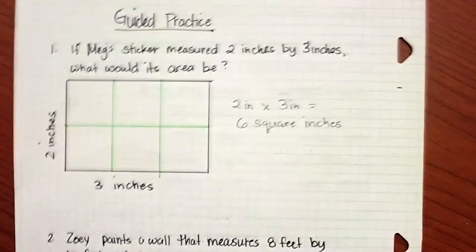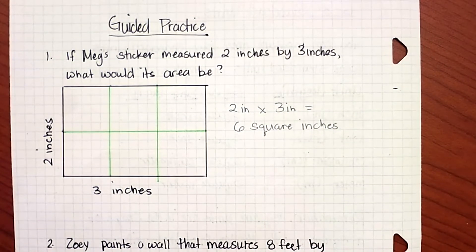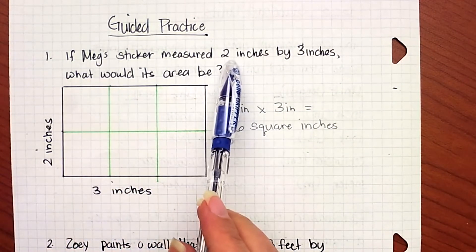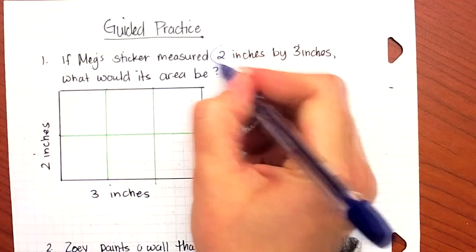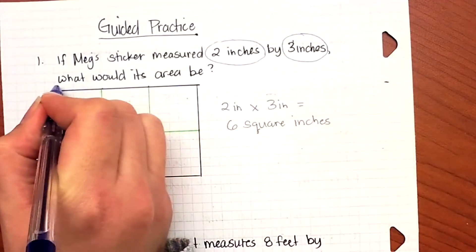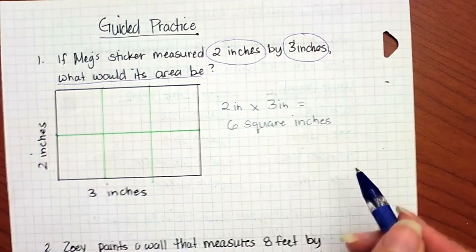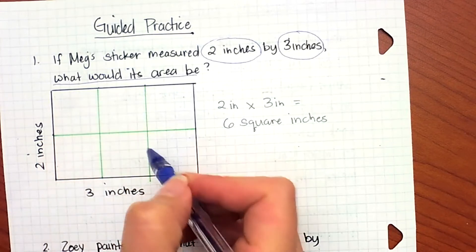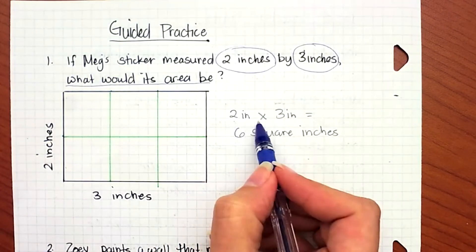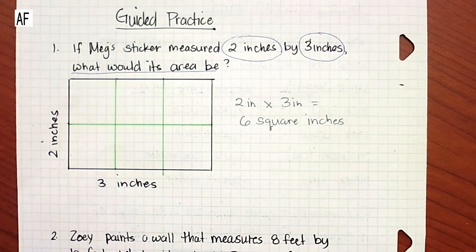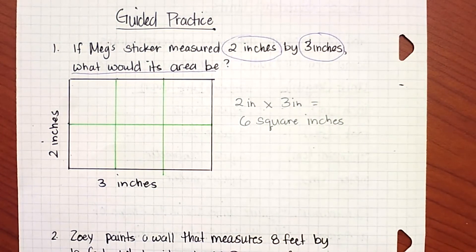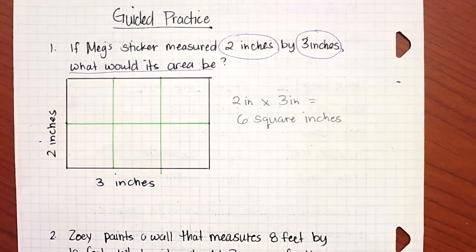Let's go on to our guided practice. For question number one, it says if Meg's sticker measured two inches by three inches, what would the area be? Annotate the question: two inches by three inches, and underline what we're being asked. Two inches times three inches gives me six square inches. You have to write square inches because that is the area. If you don't write square inches, your answer is not correct. You must write the squared unit so that you know you are working with area.